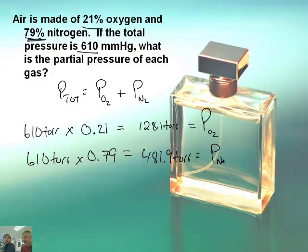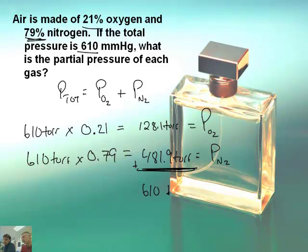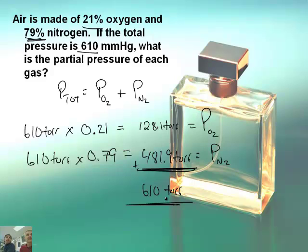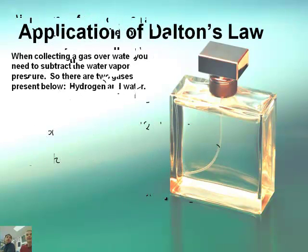And if I then take 610 torr and multiply it by 0.79 — that's 79% as a decimal — I'm going to get 481.9 torr. That's the pressure of the nitrogen. Just for grins, if you were to take these two numbers and add them up, you'd get 610 torr. So if you've got a percentage, you have to be a little bit more creative, but it really is the same principle.